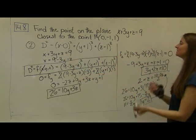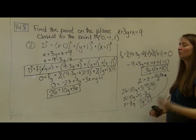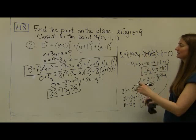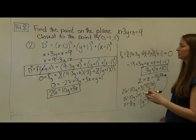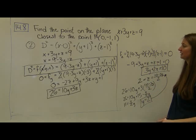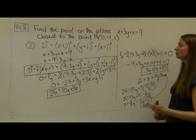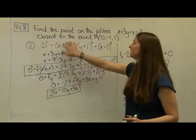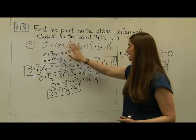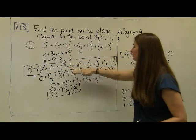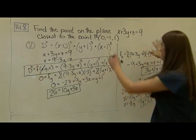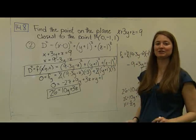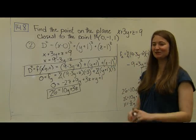We found the same solution both ways: x equals 1, y equals 2, z equals 2. Method one, Lagrange multipliers: take gradients, set them equal to each other scaled by lambda, and solve the system of equations. Method two, direct substitution: solve for one variable, plug back into the original function, take partial derivatives, set them equal to zero, and solve. Thanks so much.